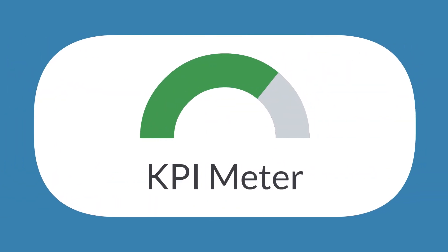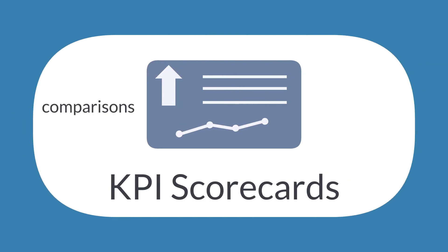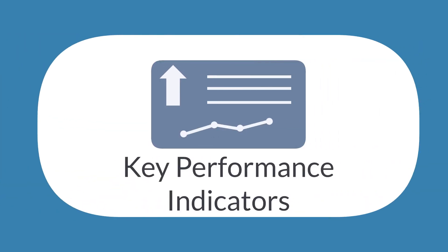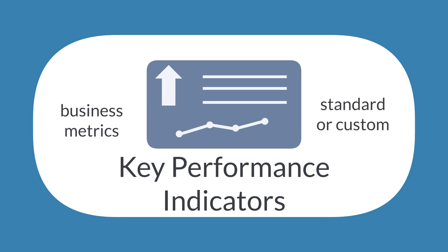The KPI meter shows a graph of specific KPI data, and you can have up to three of these on your dashboard. KPI scorecards show comparisons of KPI data, while the key performance indicators portlet contains certain business metrics. The KPIs you include in the key performance indicators portlet can be based off of standard NetSuite KPIs or custom KPIs that you define based on custom saved searches.